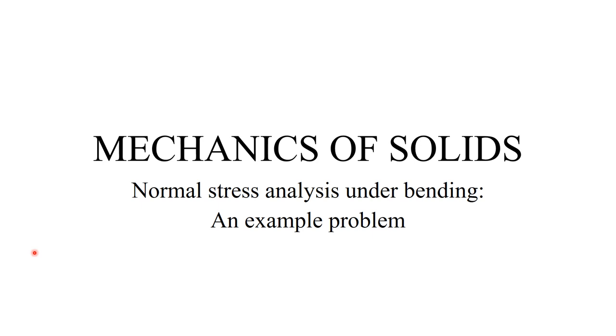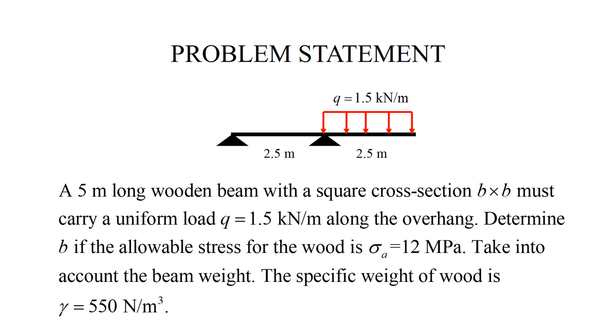The purpose of this example is to demonstrate normal stress analysis for beams with rectangular cross sections. The interesting part of this analysis is that we consider not only the service load of 1.5 kilonewtons per meter, but also the weight of the beam.